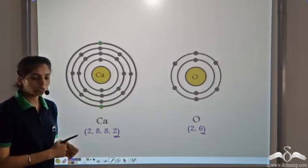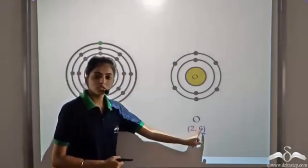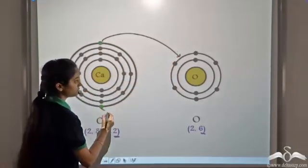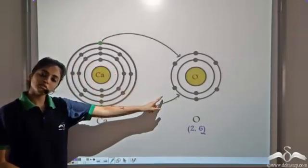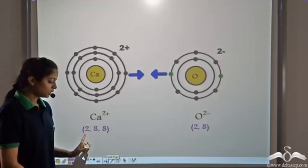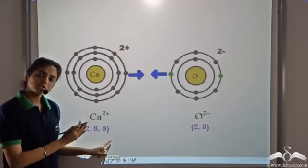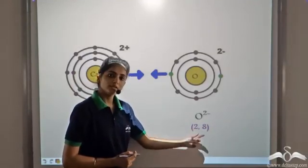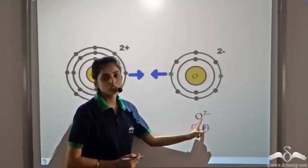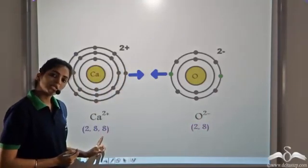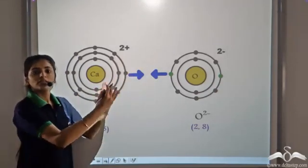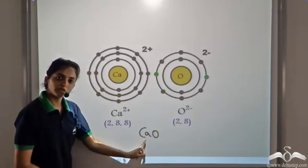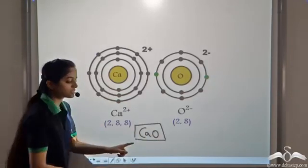To satisfy the octet rule, calcium has to get rid of 2 electrons and oxygen needs to gain 2 electrons. Calcium gives its 2 extra electrons to oxygen. By doing this, calcium now has the configuration 2, 8, 8 and since it has lost 2 electrons, it becomes Ca²⁺. Oxygen has gained 2 electrons, reaching configuration 2, 8, and becomes O²⁻. Both now have stable electronic configurations. Since they have unlike charges, they attract each other and form the compound CaO — one atom of calcium and one atom of oxygen.